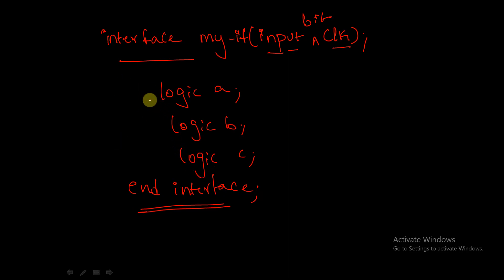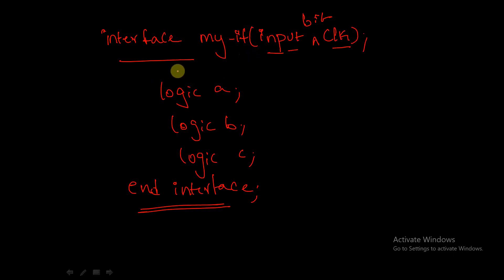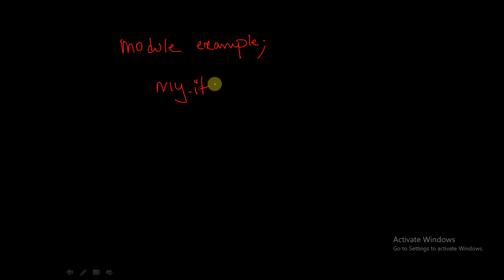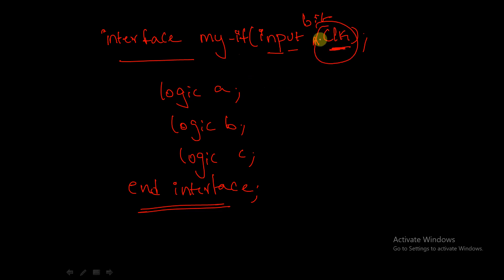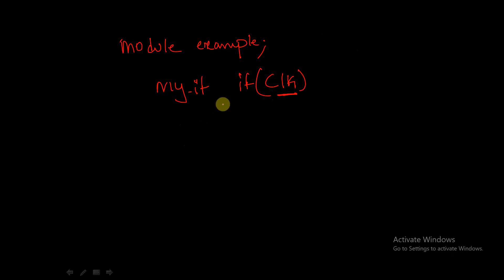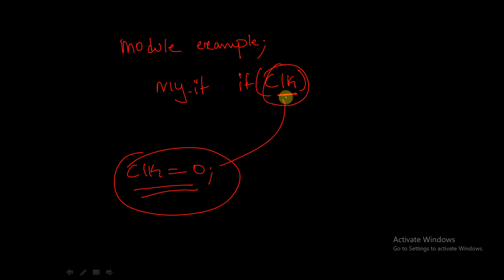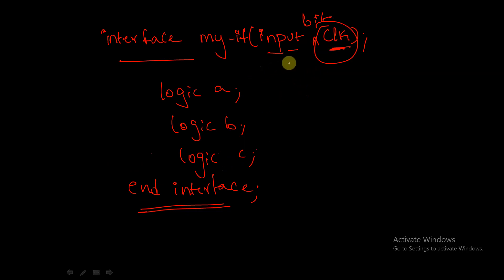If I want to use this interface in a module — say module example — I write the interface name my_interface, create instance intf, and pass the value for the clock argument. For example, I declare logic clock inside the module, assign clock = 0, and pass it to the interface. This is how we create an interface with arguments and pass it to our modules.